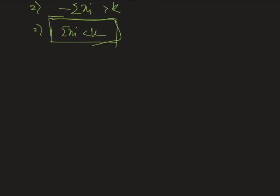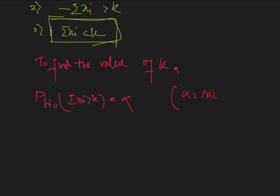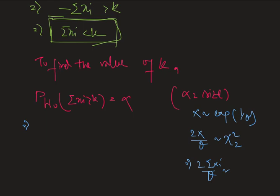Now to find the value of k, we need the help of the size of the hypothesis testing, that is: probability under H₀ that sum over xi is less than k equals alpha, where alpha is the size of the test. As given by the question, x follows exponential with parameter 1 by theta. Therefore 2x divided by theta follows chi-square(2), and 2 times sum over xi divided by theta follows chi-square(2n).